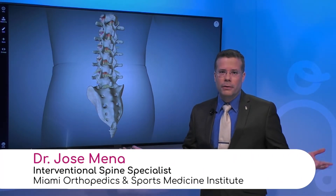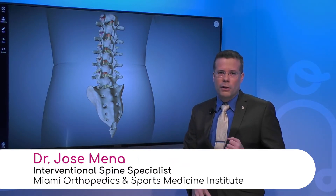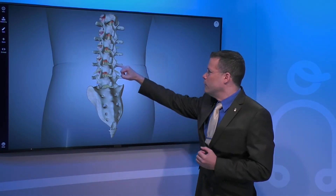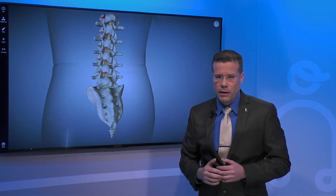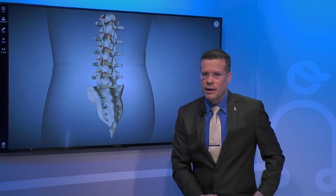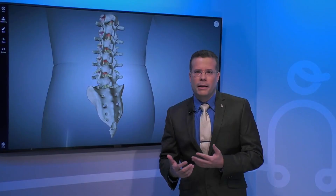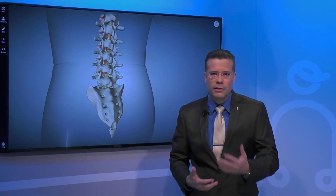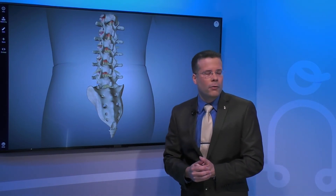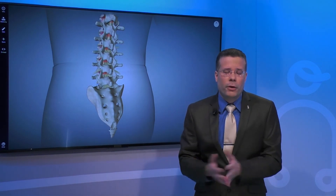We're like electricians — although you might have a problem in your lower back, you might feel a jolt of pain going down the leg. Depending on which nerve is being affected, you might feel it in a specific distribution, either on the side of the leg, back of the leg, or front of the leg. Patients will typically have complaints of numbness and tingling, and if it's severe enough, they can have weakness.